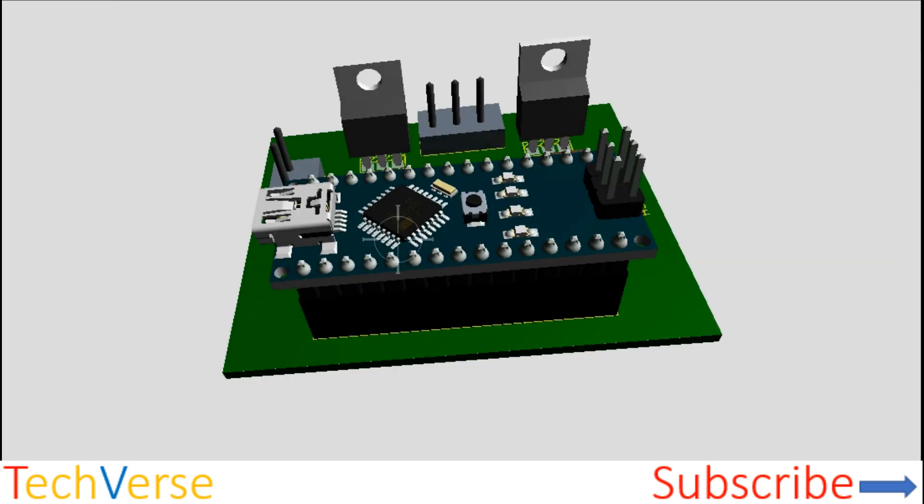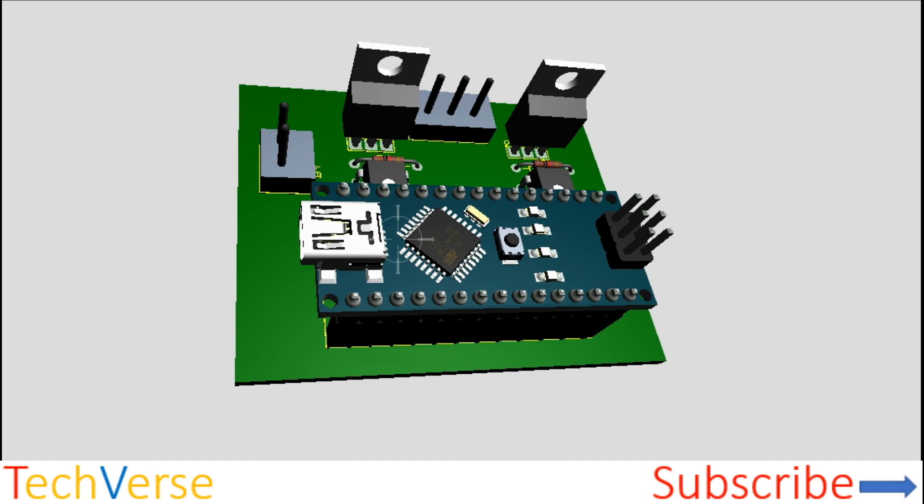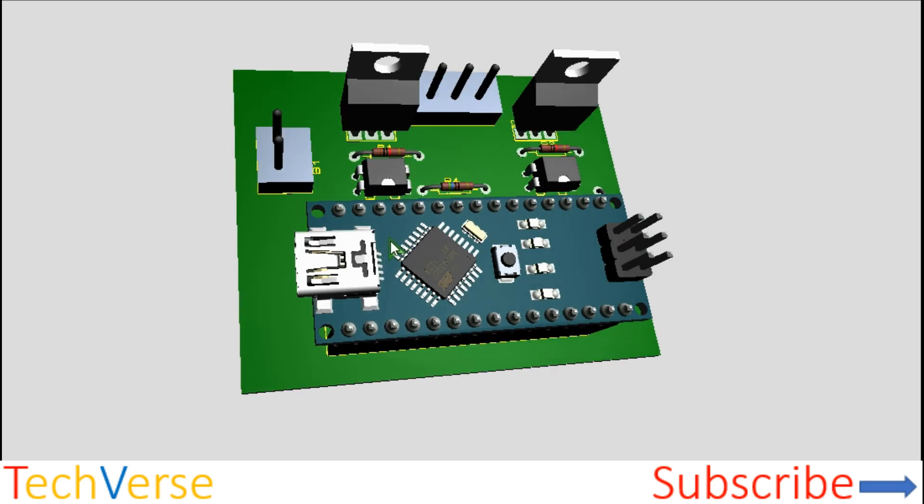And this is the finished grid view version. It's a very tiny board. Everything is as shown here. You have the input connector, the Arduino Nano, this is the first and second optocouplers, these are the resistors.